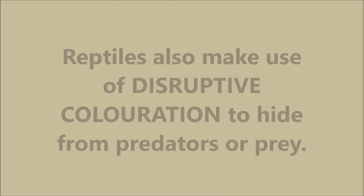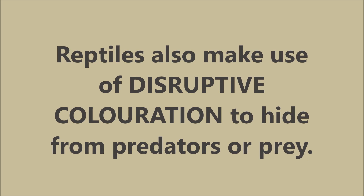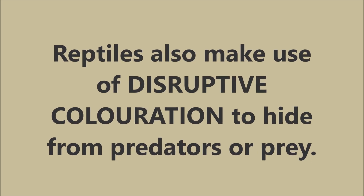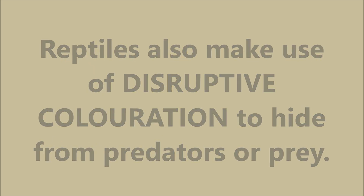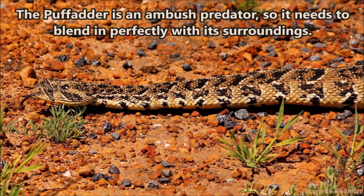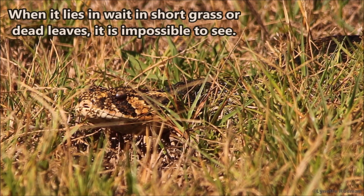Reptiles also make use of disruptive coloration to hide from predators or prey. The puff adder is an ambush predator, so it needs to blend in perfectly with its surroundings. When it lies in wait in short grass or dead leaves, it is impossible to see.